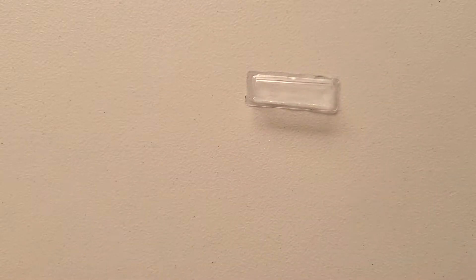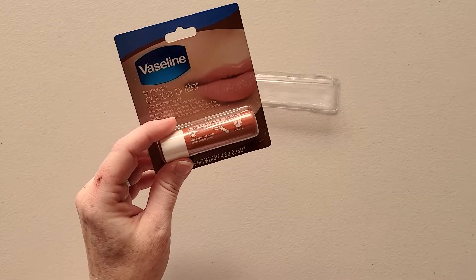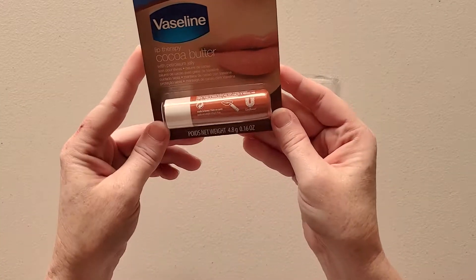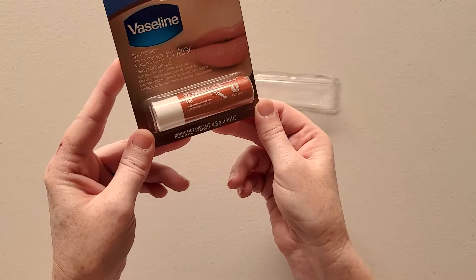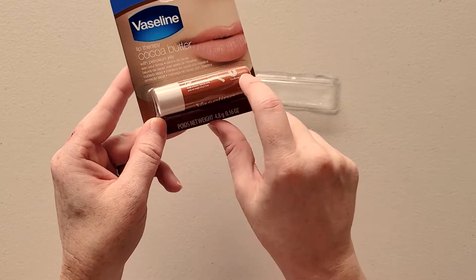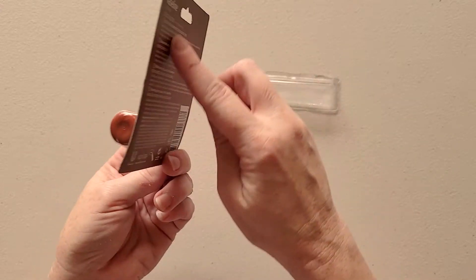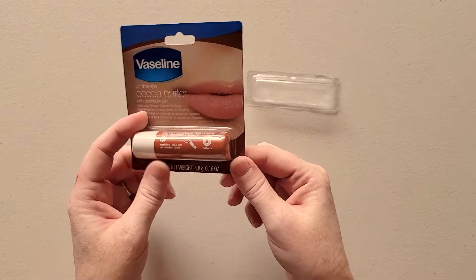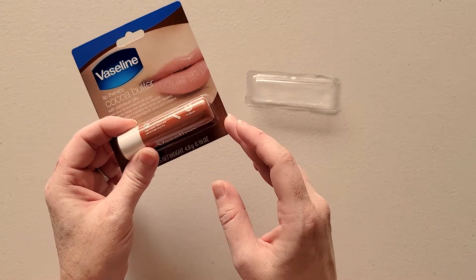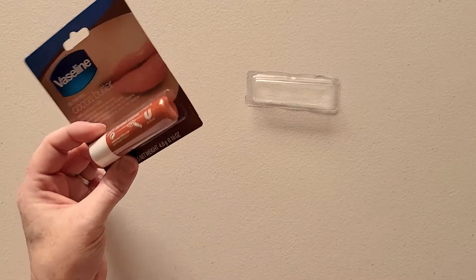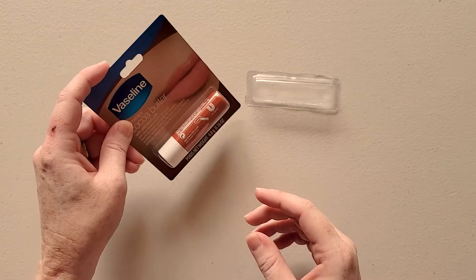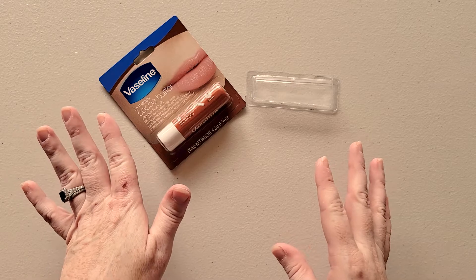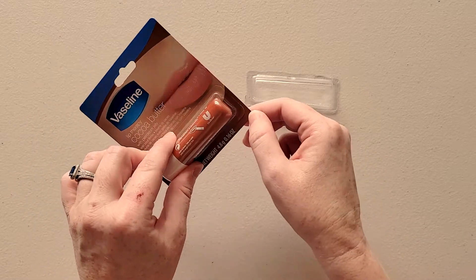Then what you can do is go to your local dollar store and pick up a cheap lip balm that has the plastic holder on it, and then just remove the plastic backing or the cardboard backing from the plastic. I found that the best way to do that was just to dip this into some really hot water and let that cardboard soften so I could peel it off.